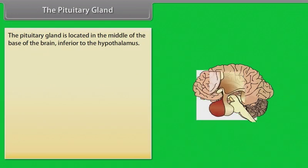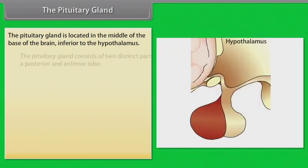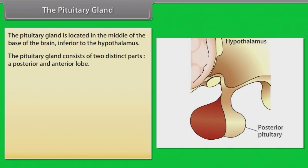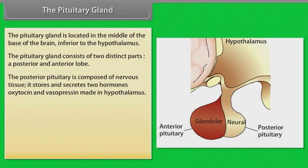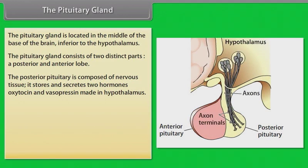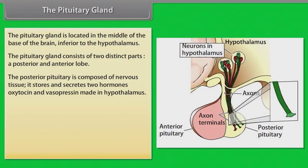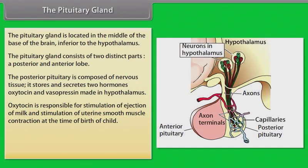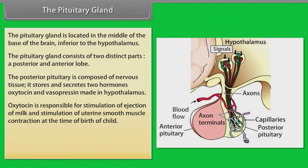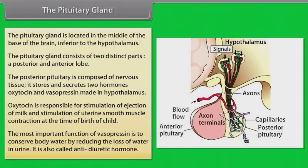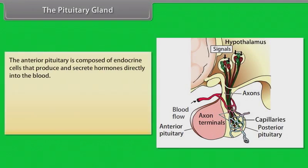The pituitary gland is located in the middle of the base of the brain, inferior to the hypothalamus. It consists of two distinct parts: a posterior and anterior lobe. The posterior pituitary is composed of nervous tissue and stores and secretes two hormones, oxytocin and vasopressin, made in the hypothalamus. Oxytocin is responsible for stimulation of milk ejection and uterine smooth muscle contraction at the time of childbirth. The most important function of vasopressin is to conserve body water by reducing loss of water in urine; it is also called anti-diuretic hormone.